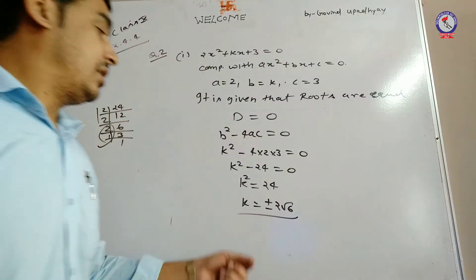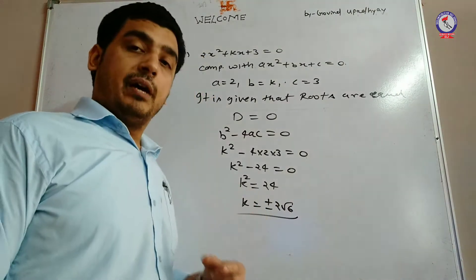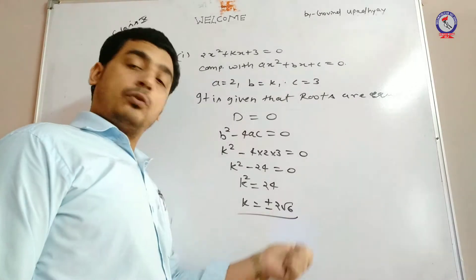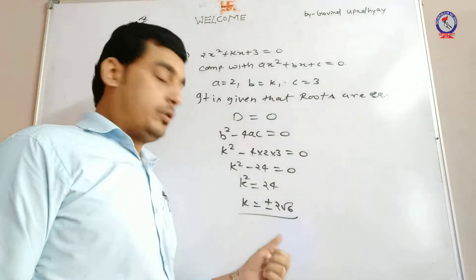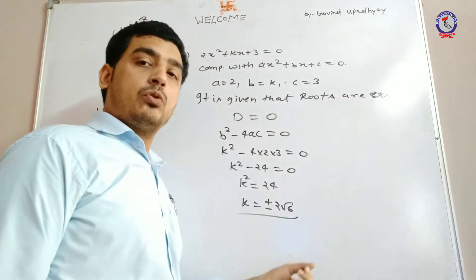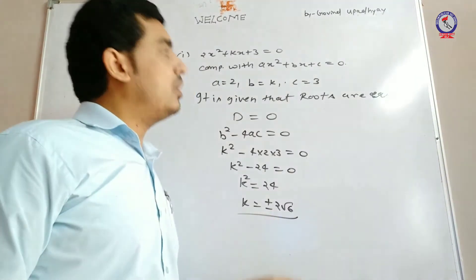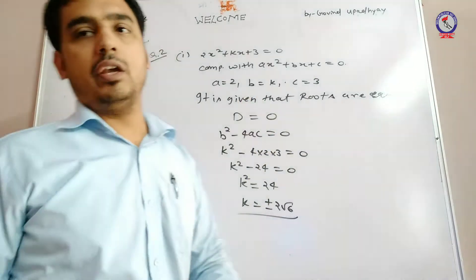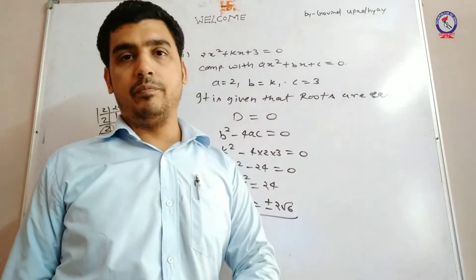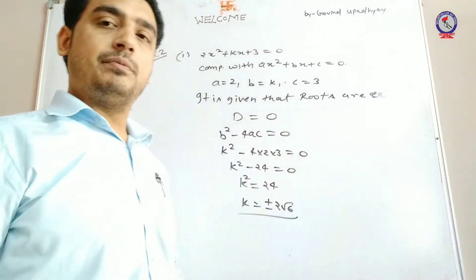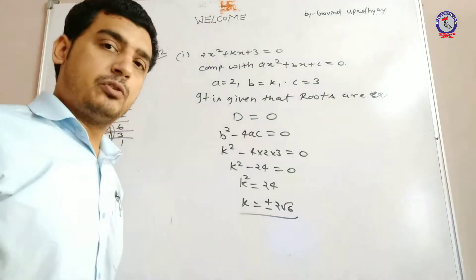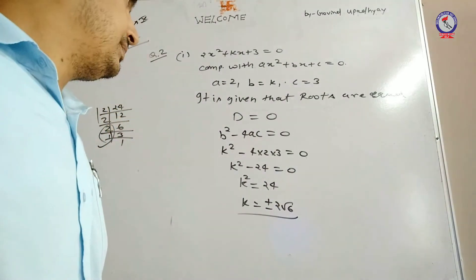इसका मतलब, question में जब हमारे पास k की value या तो plus 2 root 6 होगी, या minus 2 root 6 होगी, तो हमारे जो roots हैं वो equal condition में होंगे। यह question आपको समझ में आया होगा, इसी का second part देख लेते हैं।